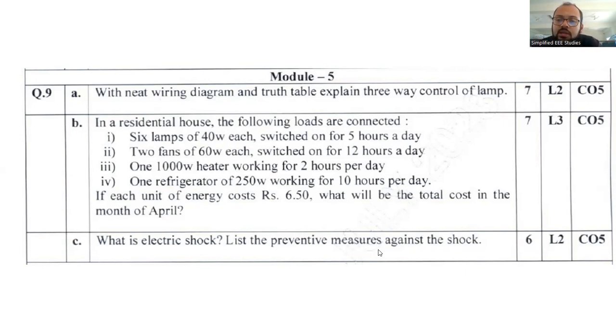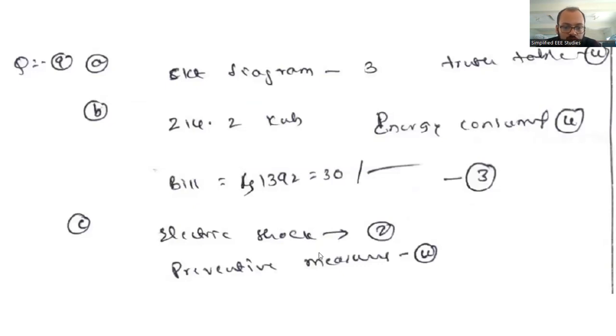List the preventive measures: Use high quality appliances, wear gloves when operating with electricity, put on shoes, maintain and avoid moisture content, avoid broken conductors, and purchase high quality insulation. Electric shock is 2 marks, precautions 4 marks.